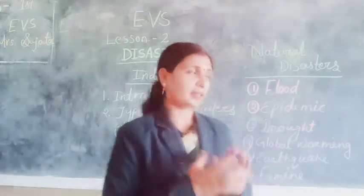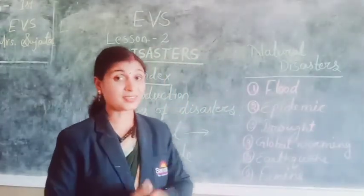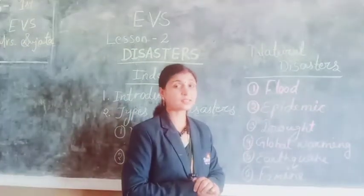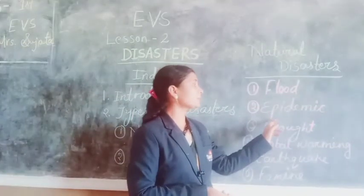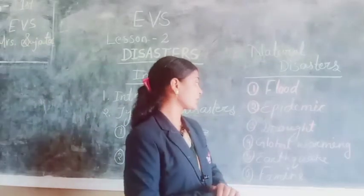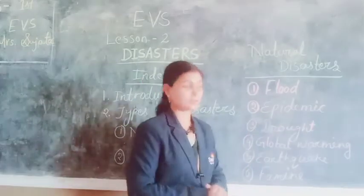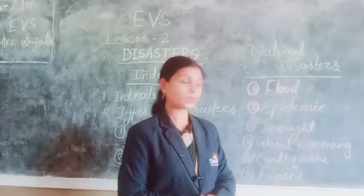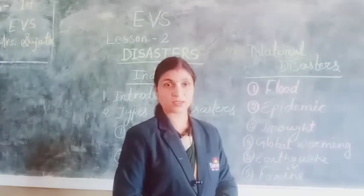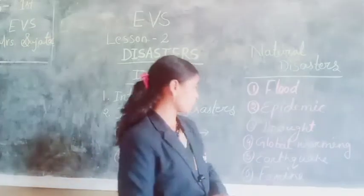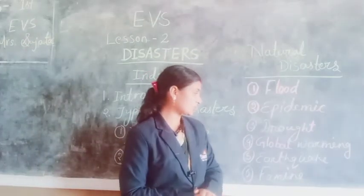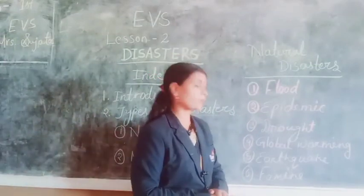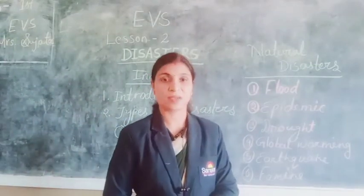Let us study them in detail. What are the natural disasters? First is flood. Second is epidemic. Third is drought. Fourth is global warming. Fifth is earthquake. And sixth is famine.